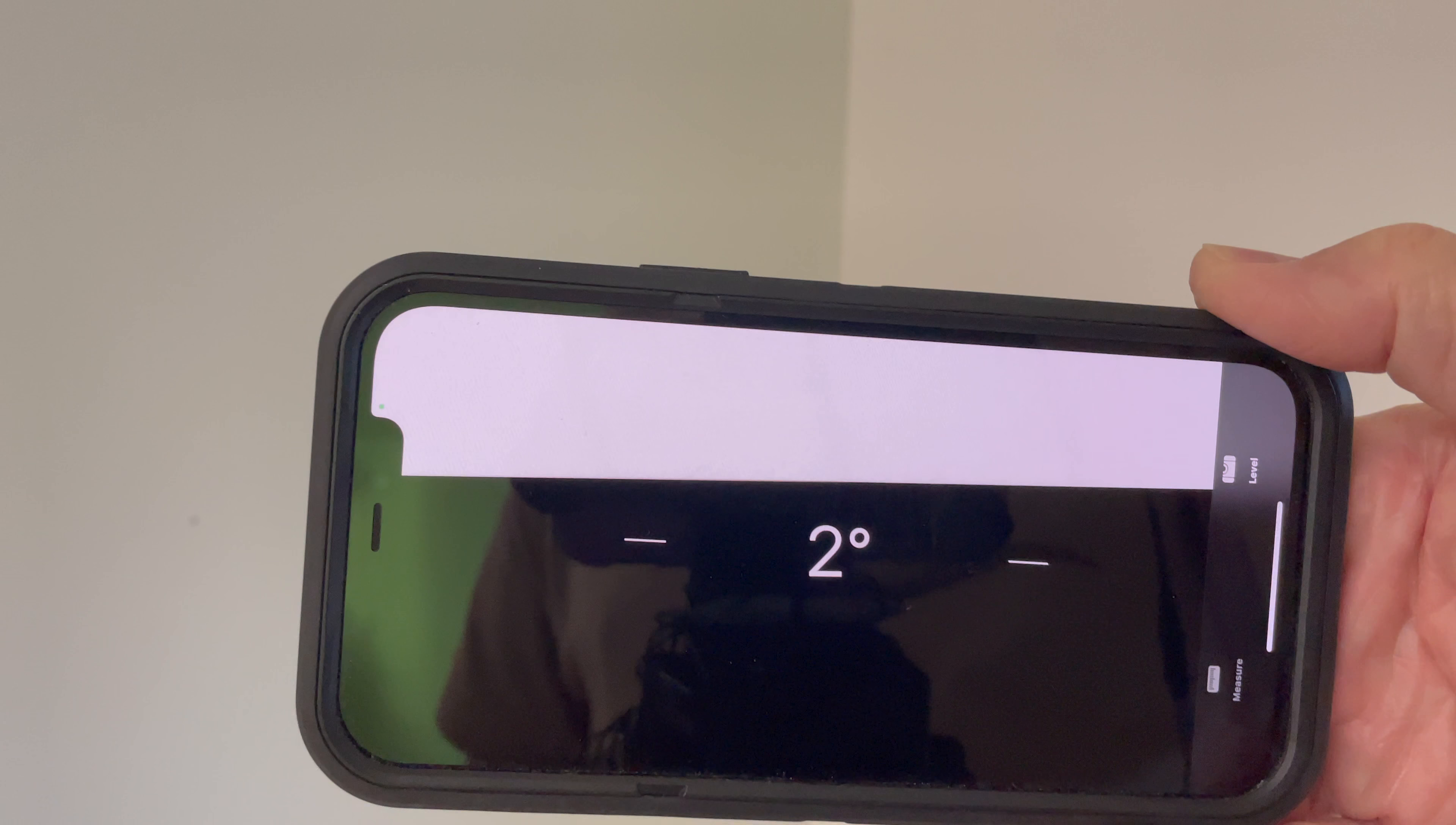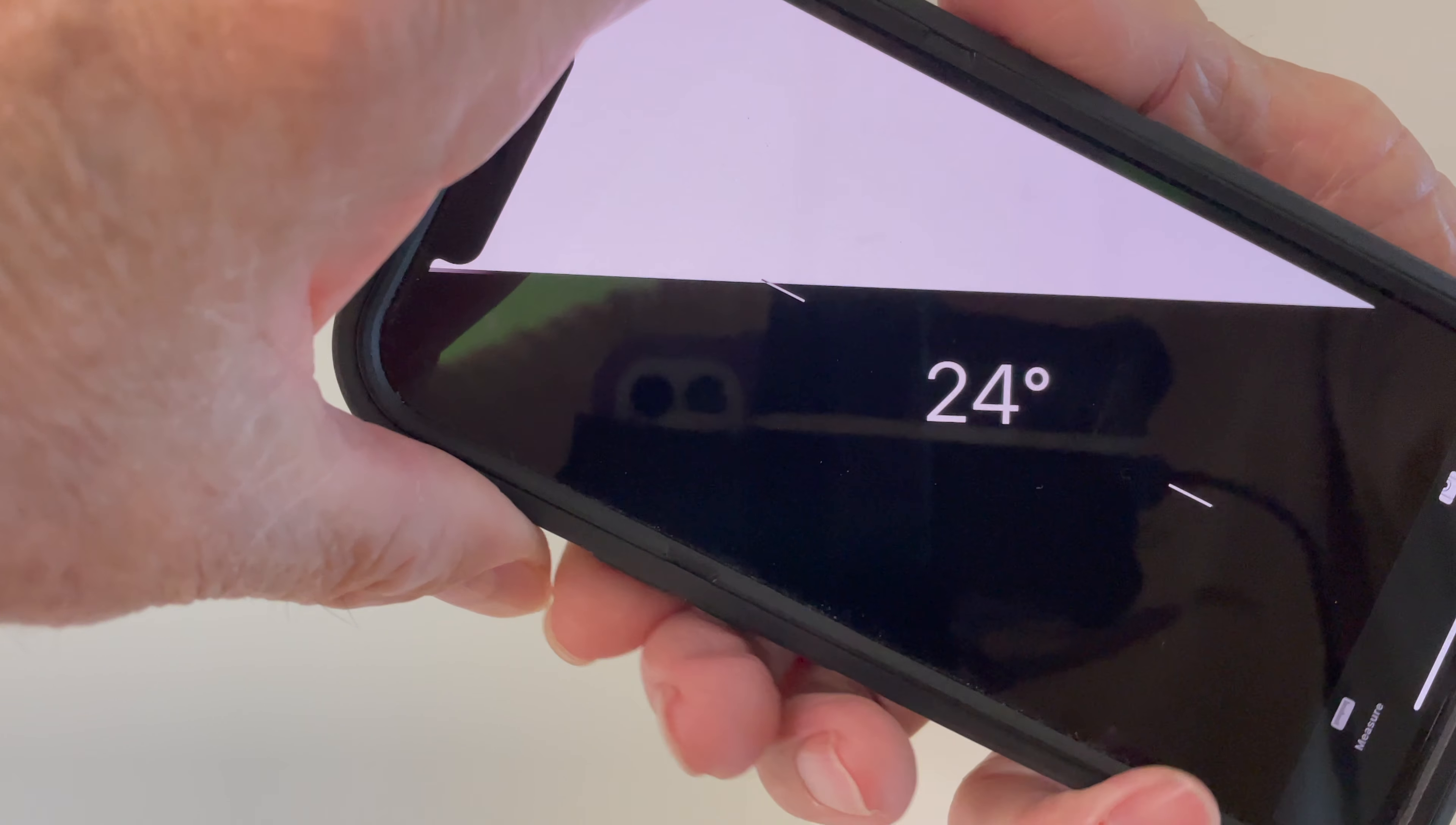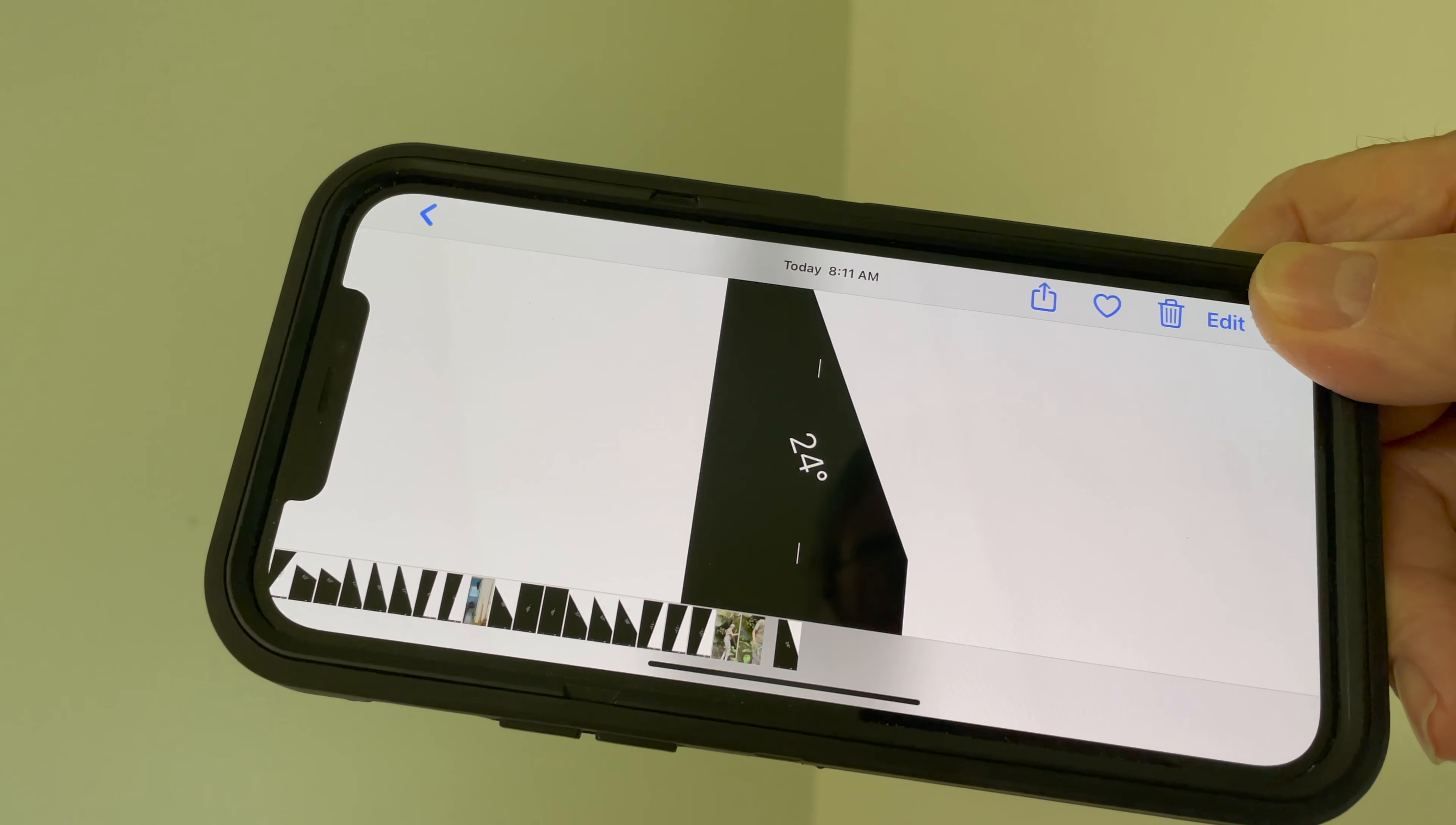What you want to first do is zero, let it go green. Then you aim it like you're looking up towards the top of the tree. Then you can take a screenshot by pressing the volume up button and the side button simultaneously. Then you've got it stored in your photos. So that's a convenient way out in the field by yourself to measure the angle up to the top of a tree and store it in your photos.